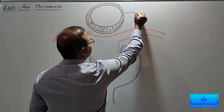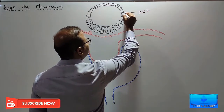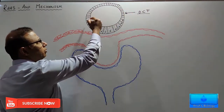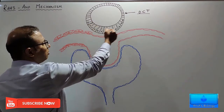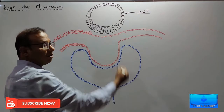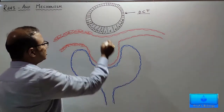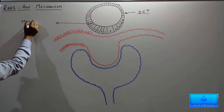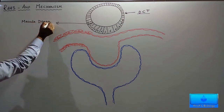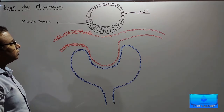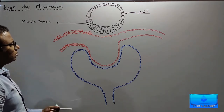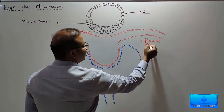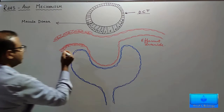This tube is the distal convoluted tubule. Generally, the distal convoluted tubule is lined by cuboidal epithelium, whereas in this part of the DCT we have granulated, tall, compactly arranged cells which are called macula densa. This is the efferent arteriole.